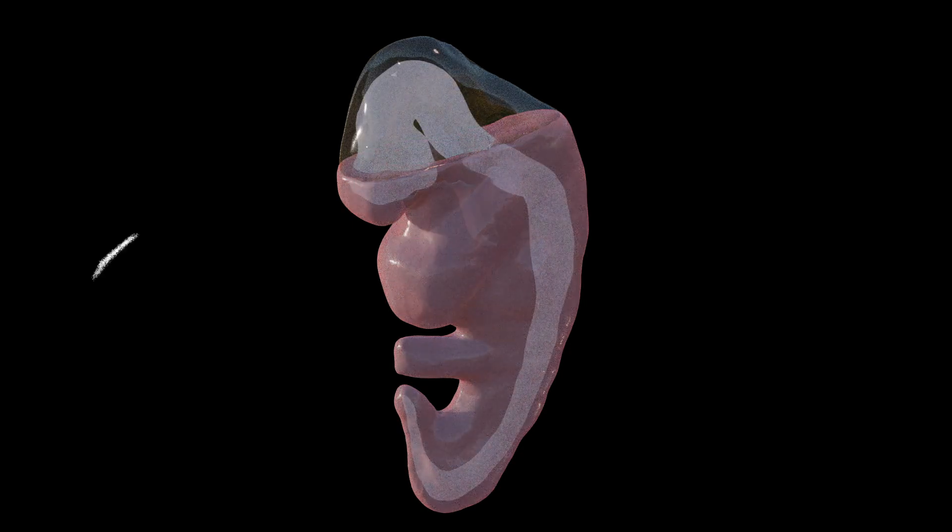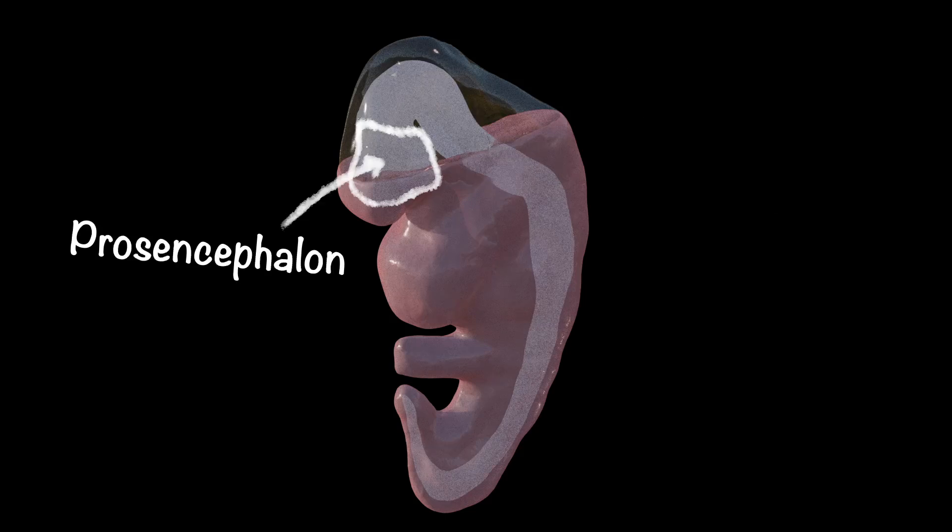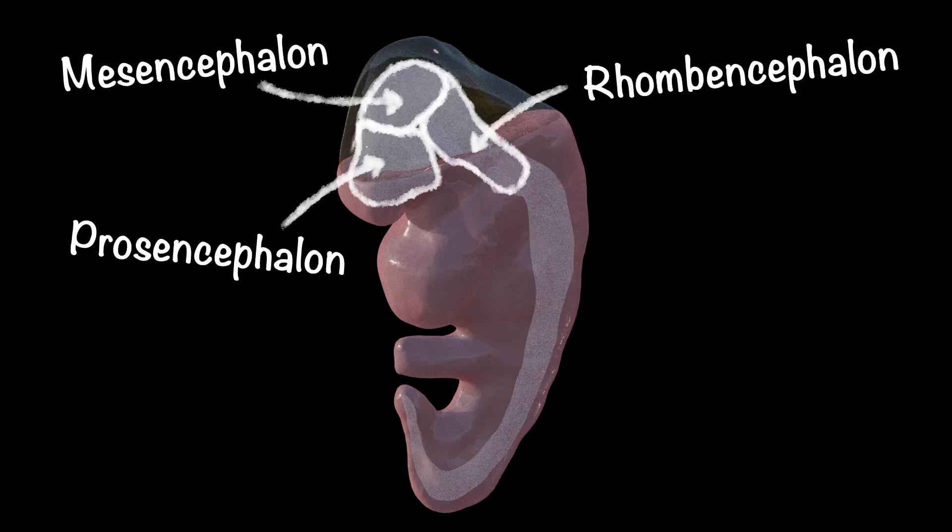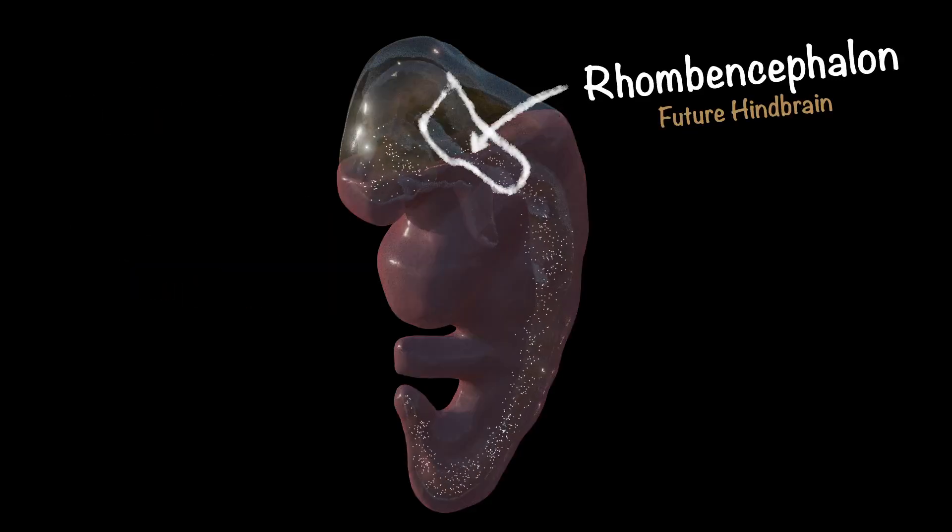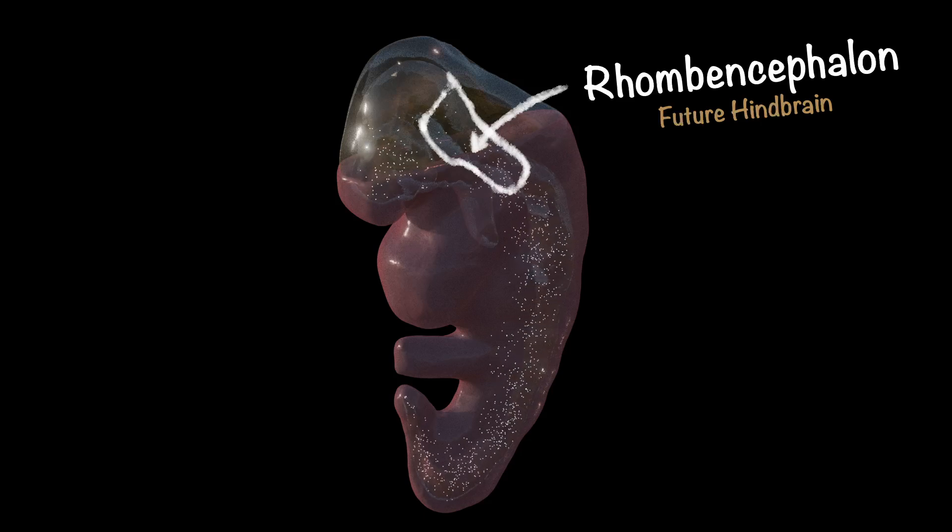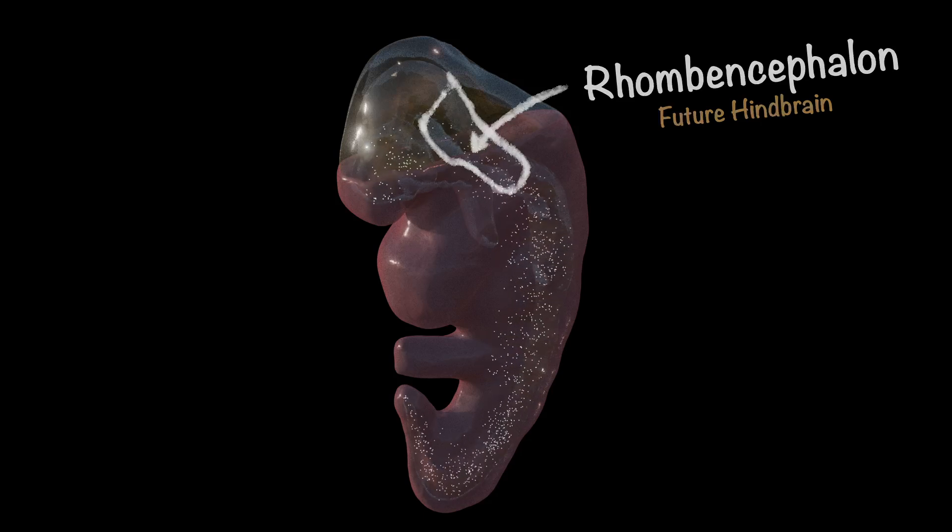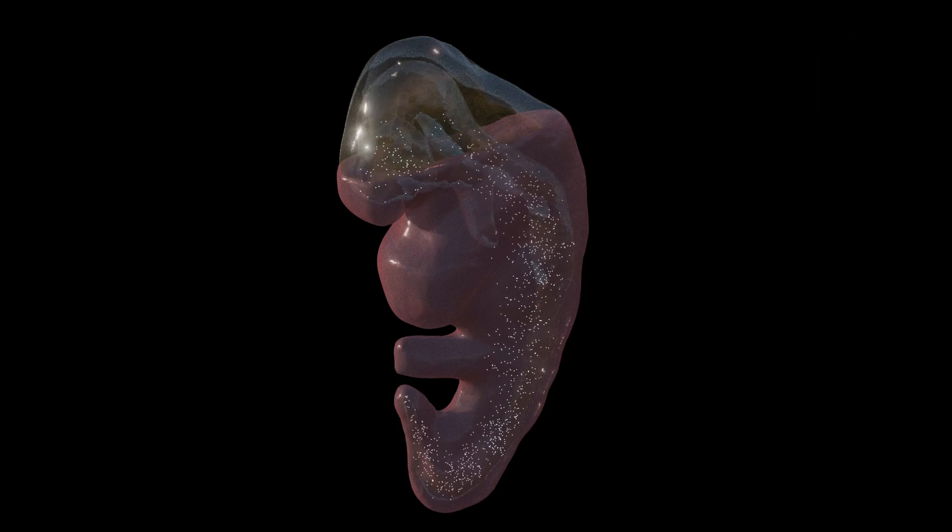By this stage in development, brain formation is already in motion. Mini-Me has proudly developed his primary brain vesicles, the prosencephalon, mesencephalon, and rhombencephalon, the fancy names for the forebrain, midbrain, and hindbrain, respectively. Here's the coolest part. Neural crest cells migrate in from the rhombencephalon, the part of the brain destined to become the hindbrain, and take charge of the next phase.